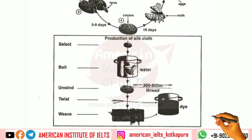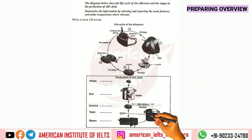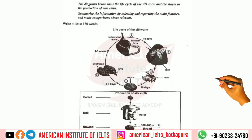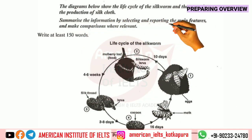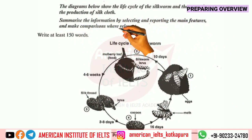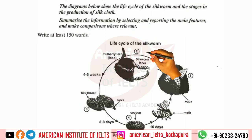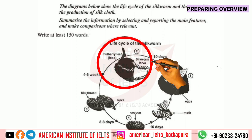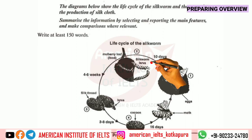So in our overview, what we can write is that it is a simple-looking process. We need to cover the main features, as the task instruction says: summarize the information by selecting and reporting the main features and make comparisons where relevant. Stage number two of the life cycle is very important because the mulberry leaf determines the output — the silk thread yield — and accordingly the cocoon is made, which later gets converted into cloth.